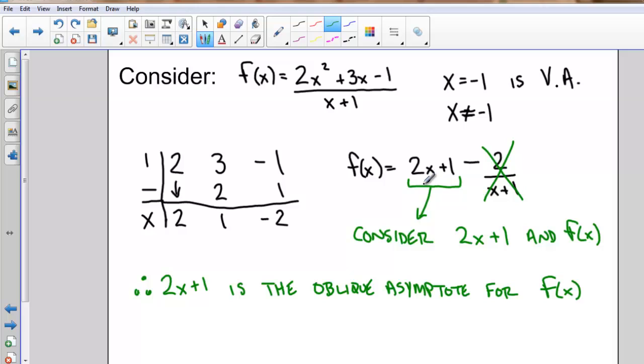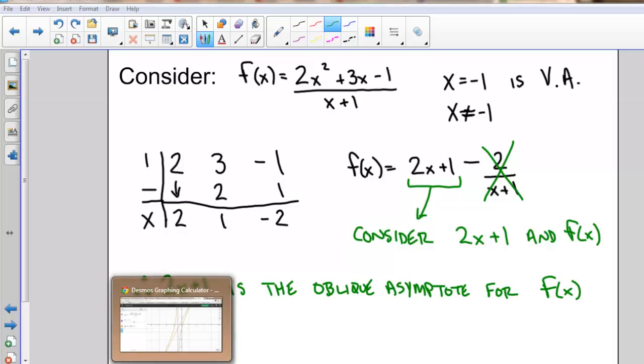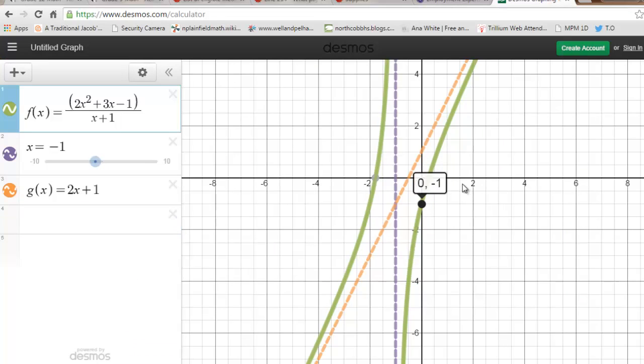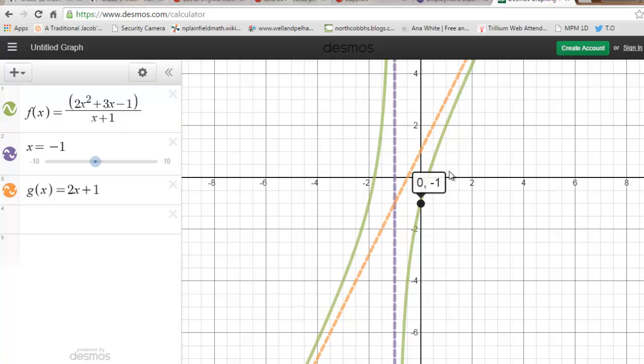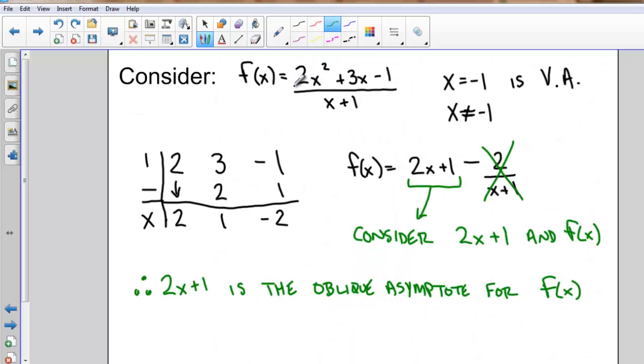If I was asking you to graph this by hand, you would still find the vertical asymptote. You would find the x and y intercepts the same way as we've been doing. So if I, for example, wanted to find the y intercept, I would set x equal to 0. And I think, if I look at Desmos, my y intercept should be at negative 1. Let's see. There's my y intercept at negative 1. To find the x intercept, you're probably going to have to do something like take the numerator and either try and factor it, or use the quadratic formula to find the x intercept.